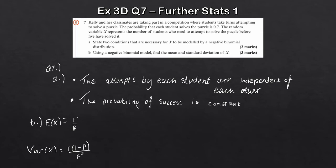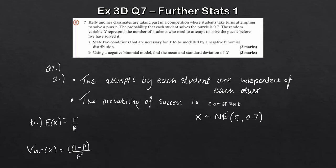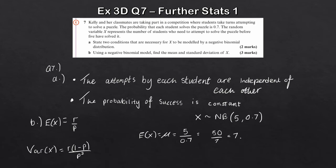E(X) = 5 divided by 0.7, which is 50/7, giving approximately 7.143. For the variance: Var(X) = 5 times 0.3 divided by 0.7 squared, which gives 3.06.